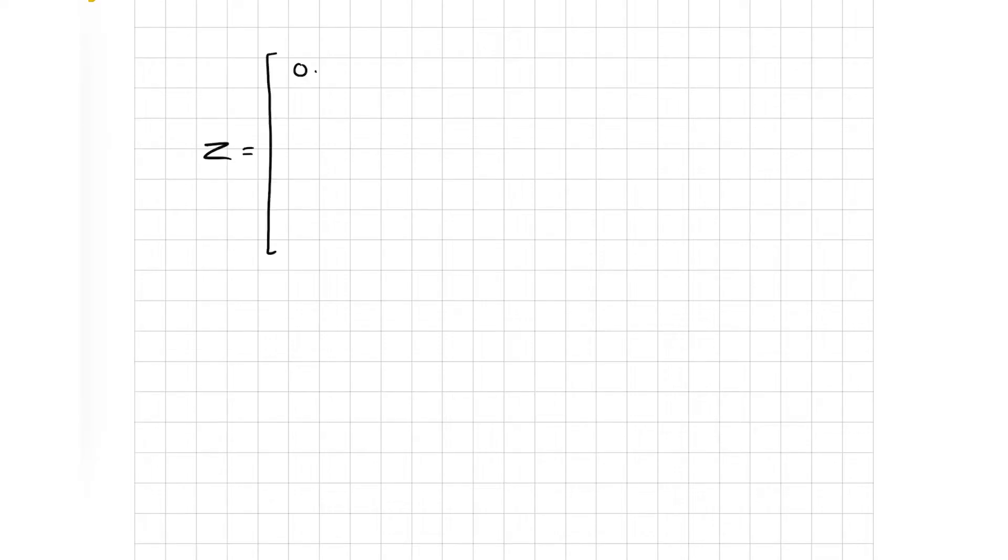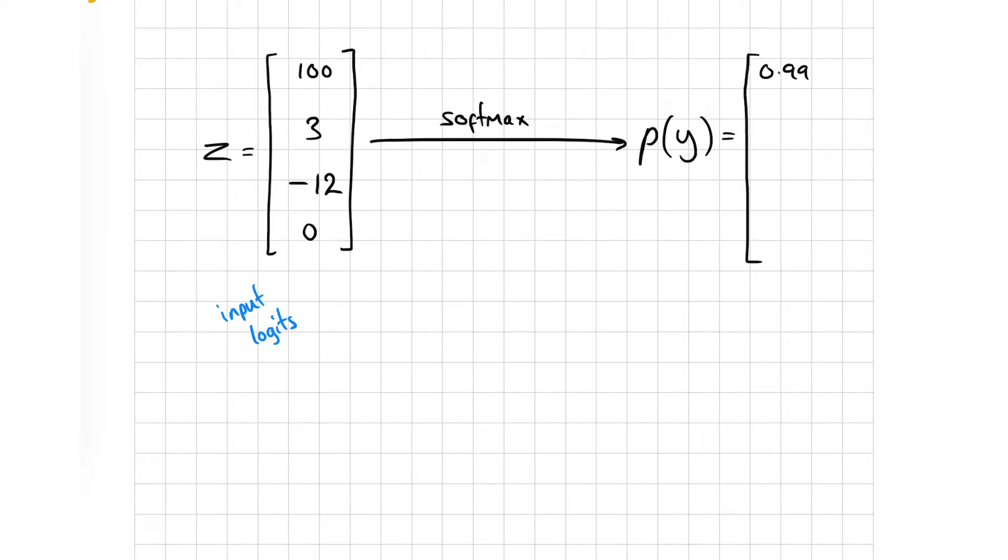To do that, you can use a mathematical function called the softmax. Most commonly, the softmax is applied to the output of a multi-class classification model to turn the real numbers which output into a distribution over different classes. It transforms a vector of numbers into a vector of numbers between 0 and 1, which sum to 1. That is a probability distribution.